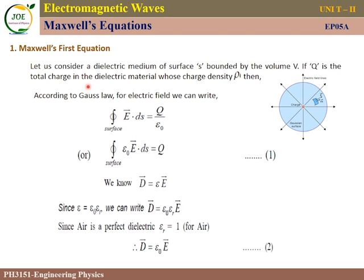Maxwell's first equation is derived by the following derivation. In this particular volume, there is Q amount of charge. The charge density is rho — that is the charge per unit volume.